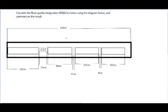Here we have a diagram of total core run and total core recovered. So I'm going to use this diagram to show you how to calculate the rock quality designation in meters. And after that, I will comment on the result.